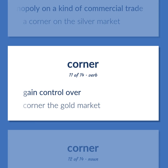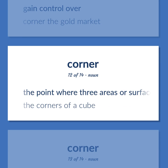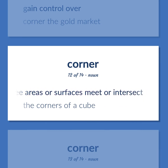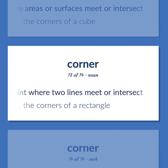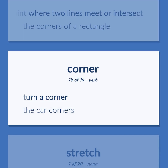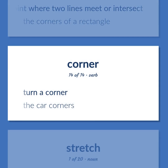Gain control over. Corner the gold market. The point where three areas or surfaces meet or intersect. The corners of a cube. The point where two lines meet or intersect. The corners of a rectangle. Turn a corner. The car corners.